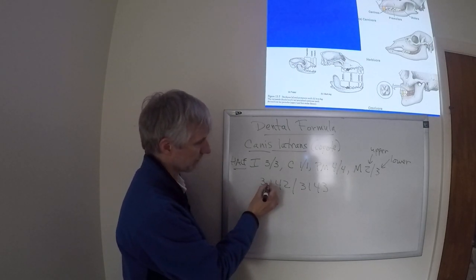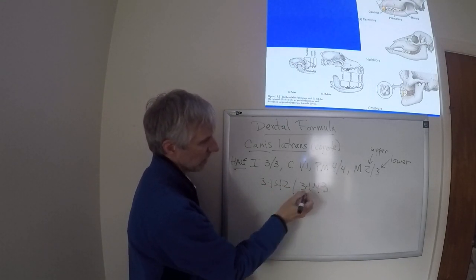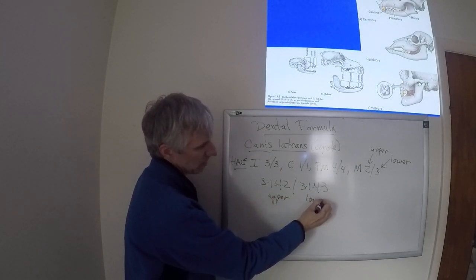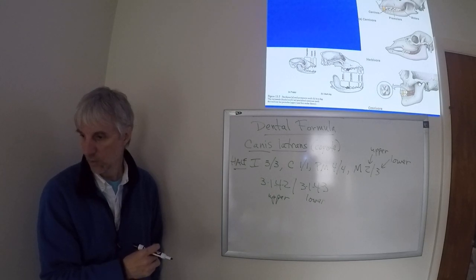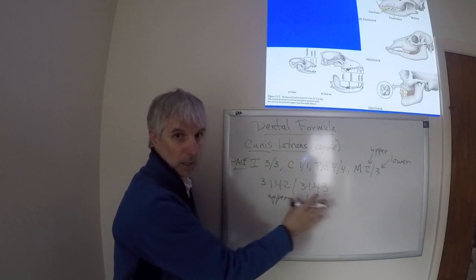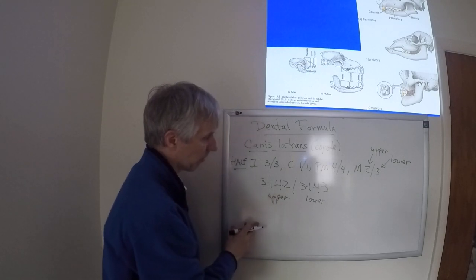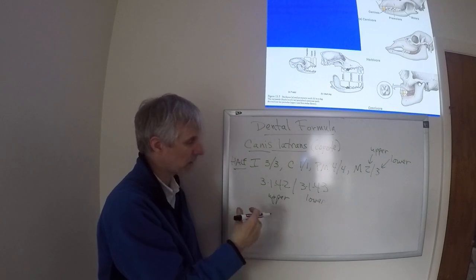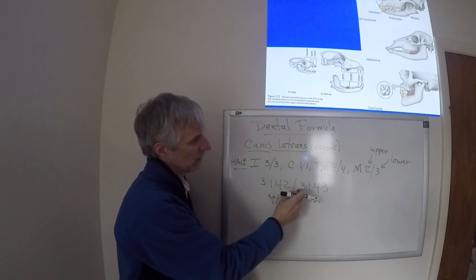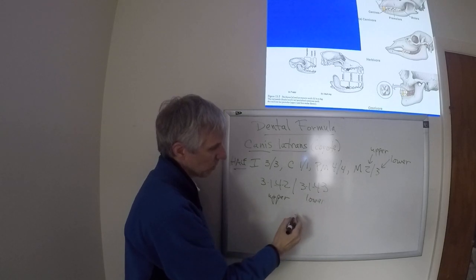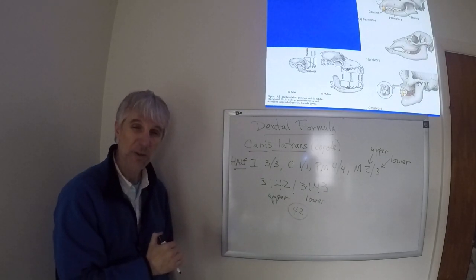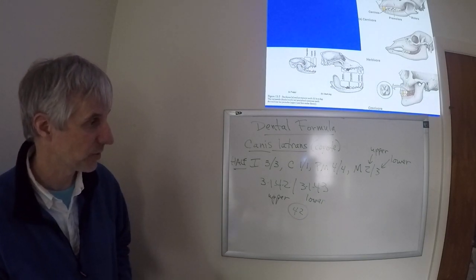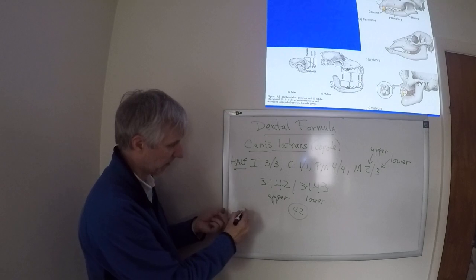The first one here - I'm going to put dashes in there - the first one is the upper jaw and then the next one is the lower. We're only looking at half of the jaw, which means the total number of teeth in the coyote, if we counted all the teeth in the jaw, would be 42 teeth total because there's 21 shown here in half of the jaw.